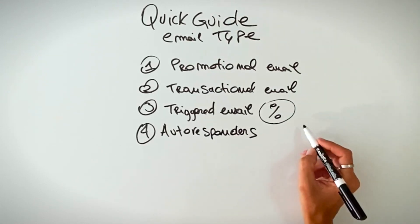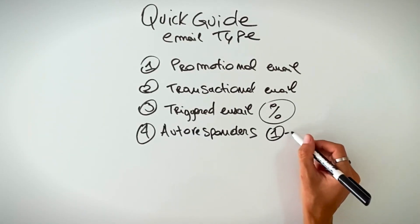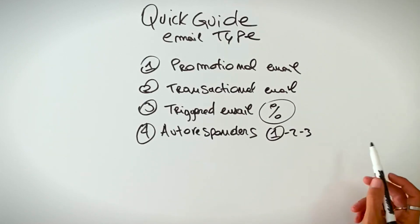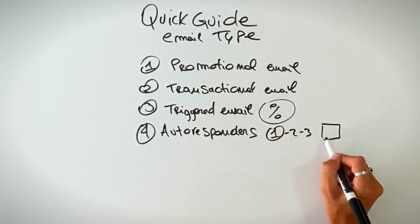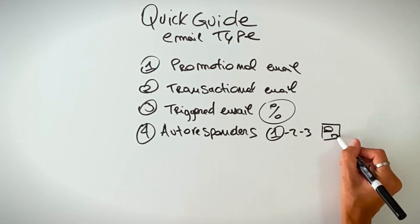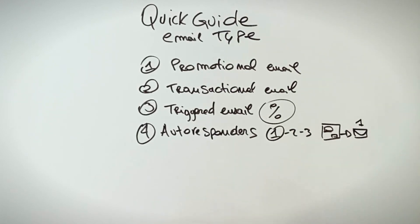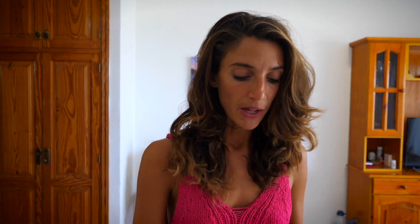Then we have autoresponders, which are really good for building your email list. An autoresponder works well for a day-one, day-two, day-three sequence. They come to your lead magnet or squeeze page, leave their email, and from day one they start receiving your emails. This is really good to do with the autoresponder, and there are also lots of other things you can do with it.